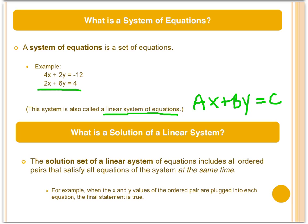The solution set of a linear system of equations includes all ordered pairs that satisfy all equations of the system at the same time. For example, when the x and y values of the ordered pair are plugged into each equation, the final statement is true.